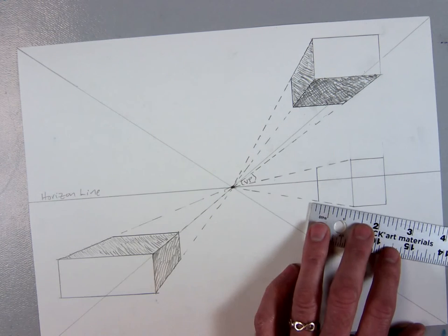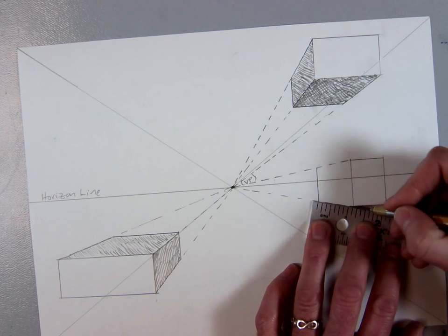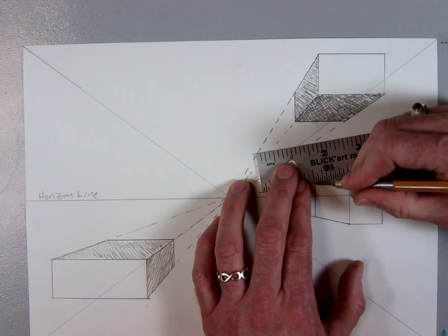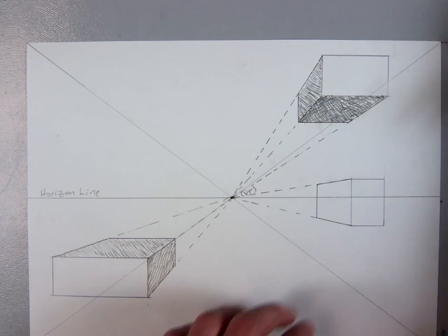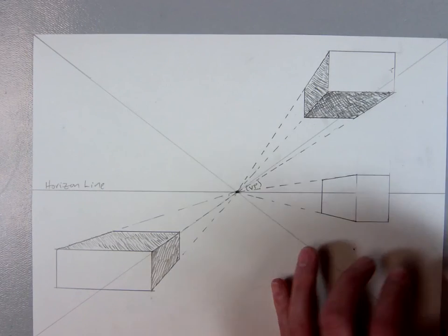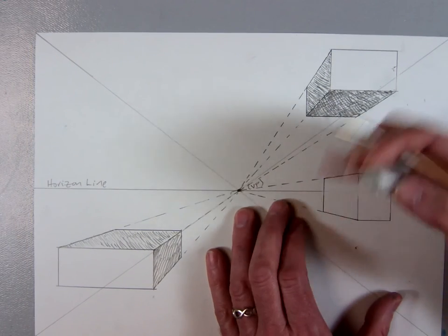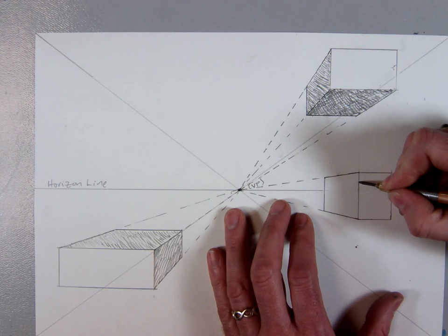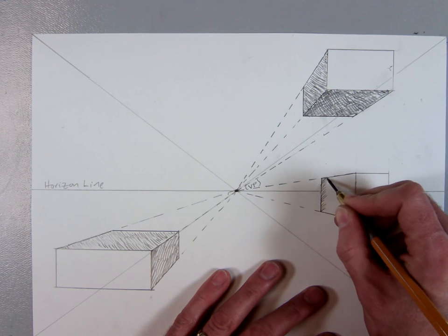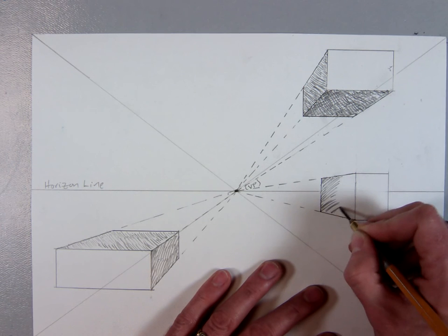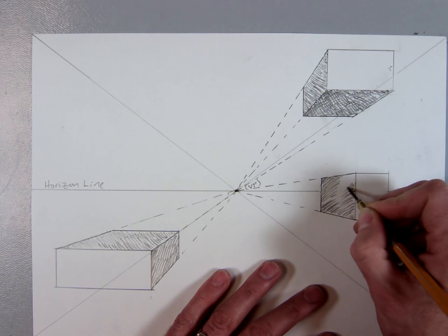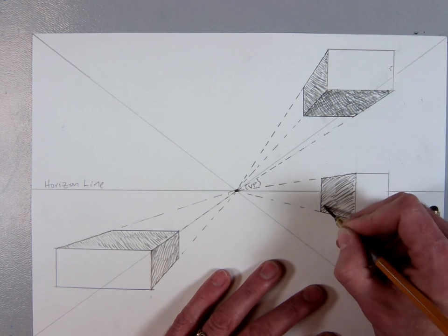I'm going to draw in this bottom edge and draw in the top edge. And of course on this one, I can't have two different kinds of values. I can only have one because there's only the one side that is facing away from us. So we've got this first front side towards us. And this other one is facing away from us a little bit. So I'm going to shade this one in so that we have that box sitting right on the horizon line.